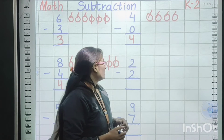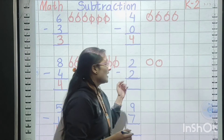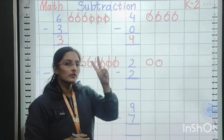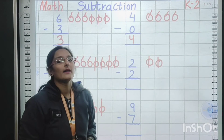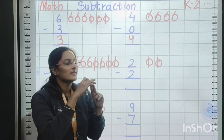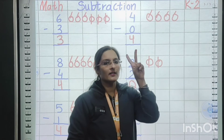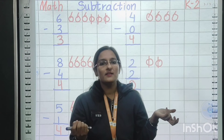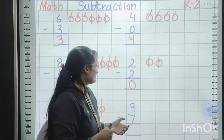Moving to the next sum: two minus two. We make two balls and we have to deduct two balls. Bigger number two in mind, next number two on fingers: one — zero. So what will be the answer? Zero. We cut all the balls, so the answer is zero.